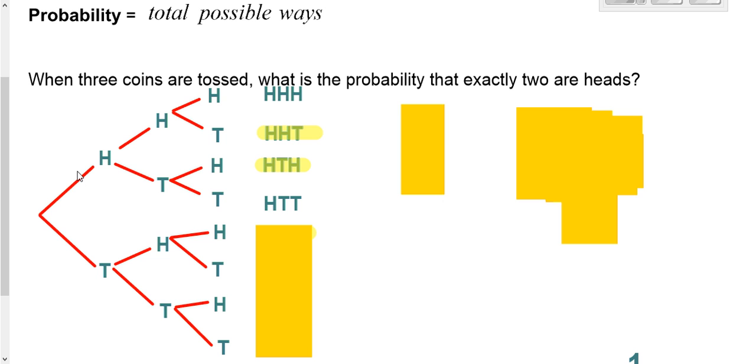Those are all the options you have by going on this upper branch right here. So now suppose we start here and come down. I'm going to come down and do a tail, head, and head. That also works for us.